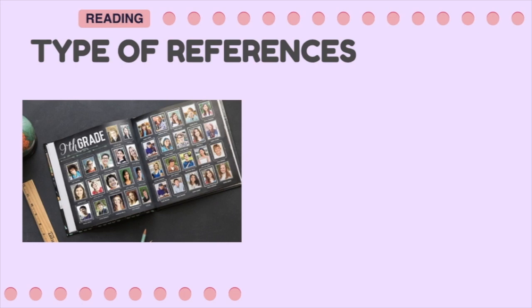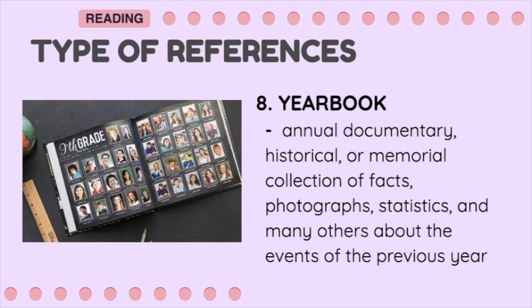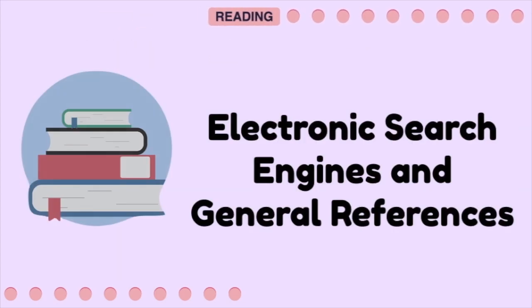The last type of reference is the Yearbook. It is an annual documentary, historical, or memorial collection of facts, photographs, statistics, and many others about the events of the previous year. Since the internet is available, some schools have uploaded their yearbooks online as soft copies. Those are the general sources you can use when searching for information. I hope that you can identify the different electronic search engines and general references and use them to gather information. Thanks for watching!